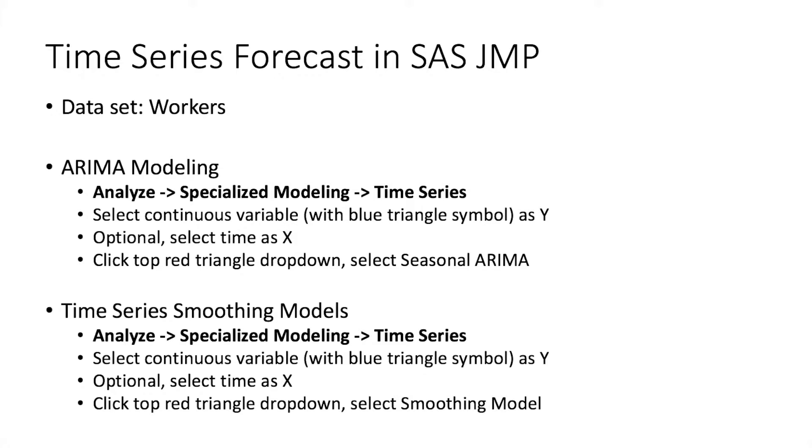To create a time series smoothing model, again we select Analyze, Specialized Modeling, and Time Series. A continuous variable is selected as the Y variable and we have the option to select a time variable as X. Then again we select the red triangle dropdown and choose Smoothing Model.